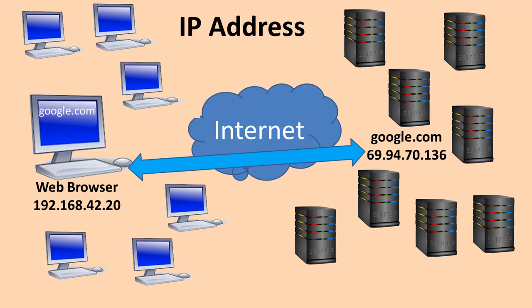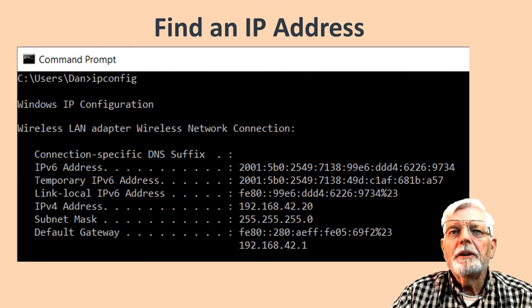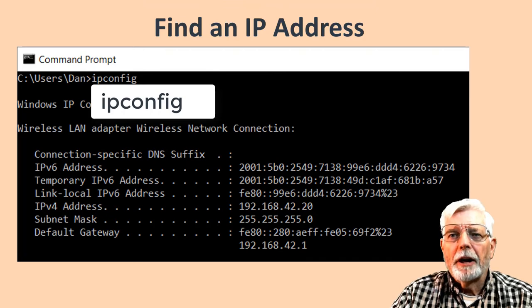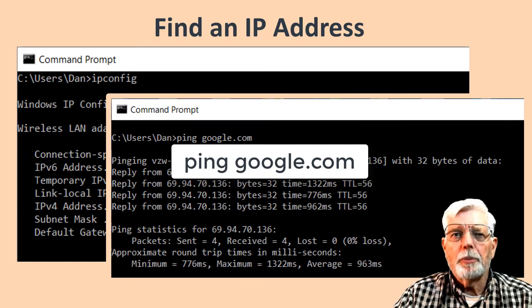The server receives the IP address of your device and is able to send data back to it. There will be more discussion on how the internet works in a later discussion. You can find the IP address of your computer or the IP address of any server on the internet by going to the command prompt on your computer. Type in the ipconfig command at the command prompt to get the IP address of your machine. Type the ping command at the command prompt to get the IP address of a server on the internet.